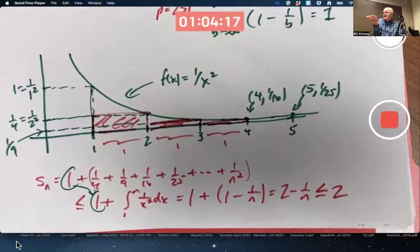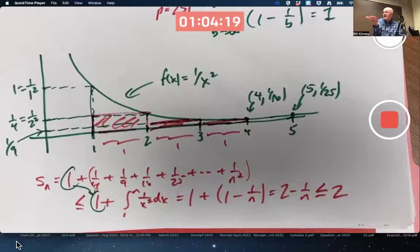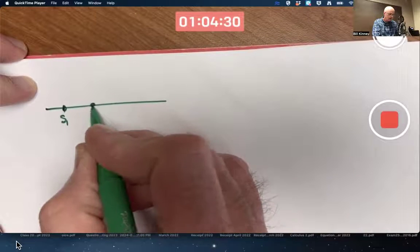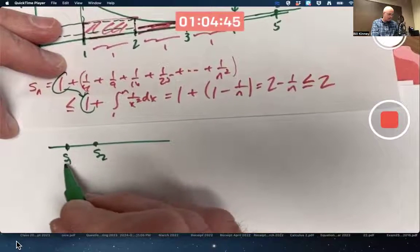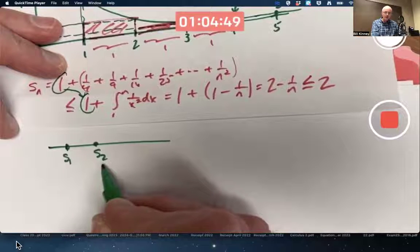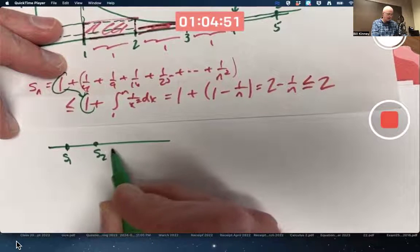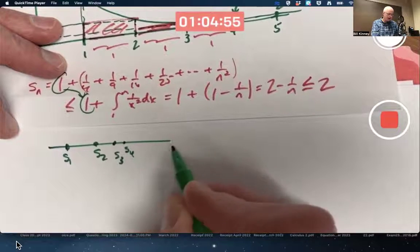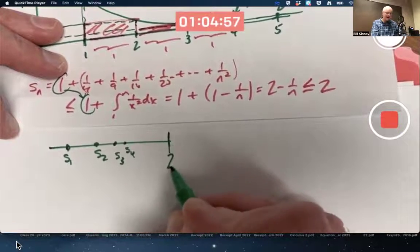And pi squared over 6 was about 1.6 something is less than 2. That's technically a theorem that I'm using in section 9.1. S1 is here. S1 is 1. S2 is 1 plus 1 fourth, 5 fourths, 1.25. S3 is here. S4 is here. They keep moving to the right getting bigger and bigger, but they for sure never get past 2.